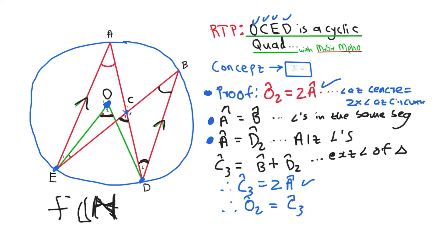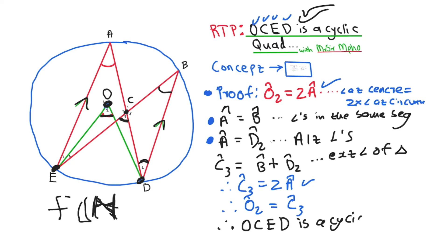We already showed that O2 = 2A, and now we've shown C3 = 2A. Therefore O2 = C3. C3 equals O2 — we proved it! And if those two are equal, then OCED is a cyclic quad, with the reason being angles in the same segment.